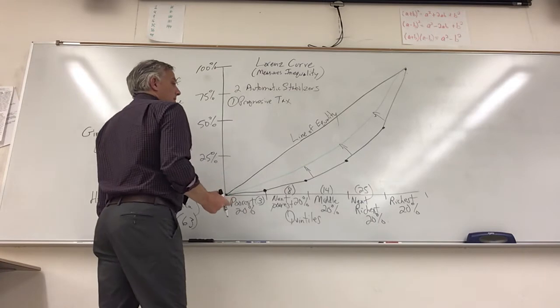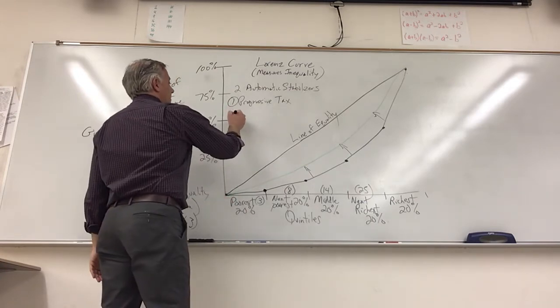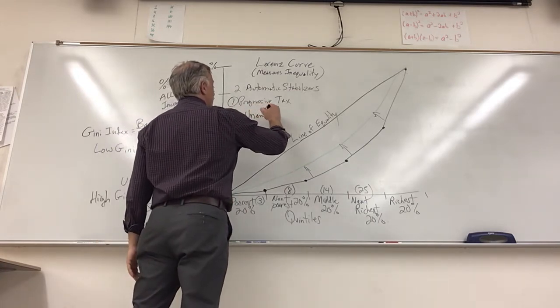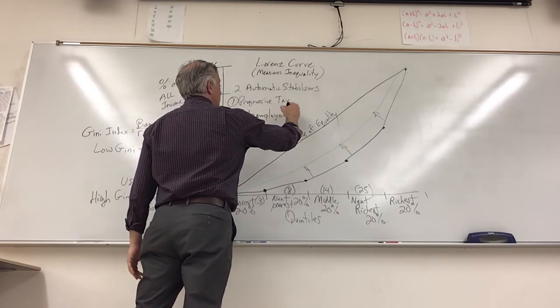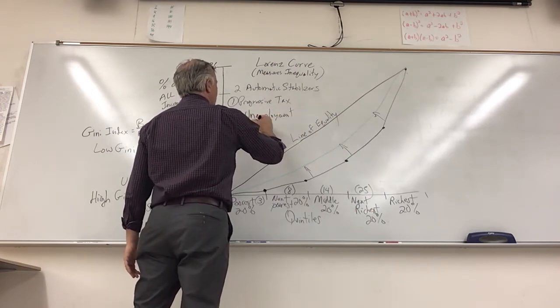We are doing something, and this is called an automatic stabilizer because if you make more money, it automatically kicks in. You don't need any legislation or voting. So the stimulus package that the government's trying to pass isn't automatic, it's got to be voted on. The progressive tax system, you make more money, you pay more taxes, you make less money, you pay less taxes, and that wealth is supposed to be redistributed, bringing in the Lorenz curve and making things more equal. Then the second automatic stabilizer is unemployment compensation.